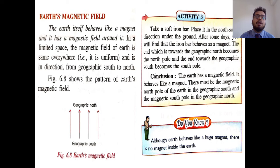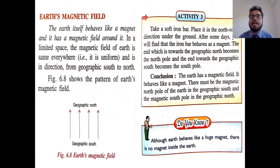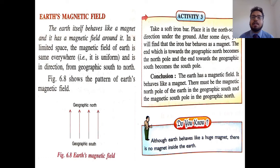Earth itself behaves like a magnet, and it has a magnetic field around it. In a limited space, the magnetic field of the earth is the same everywhere — it is uniform — and its direction is from geographical south to geographical north. If any person takes a soft iron bar and places it under the ground, after a few days the piece of iron will also turn into a magnet, because the earth has a magnetic field. The end of the iron bar towards the geographical north becomes the north pole and the end towards the south becomes the south pole.